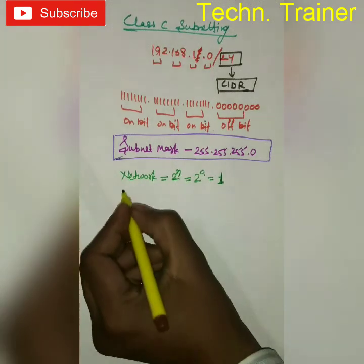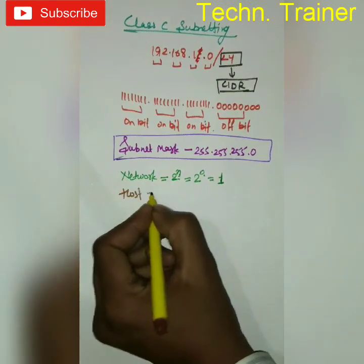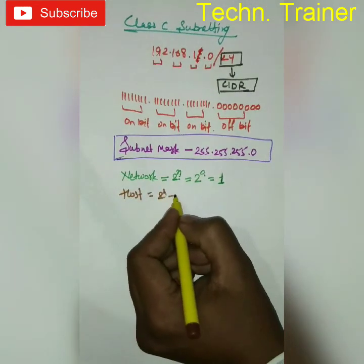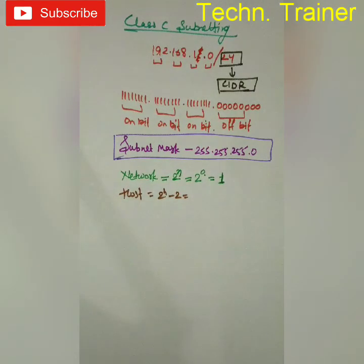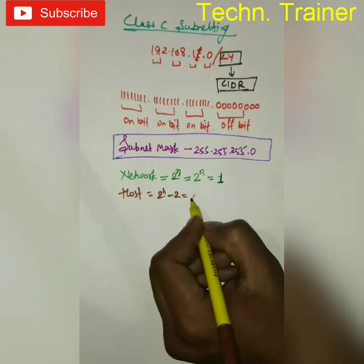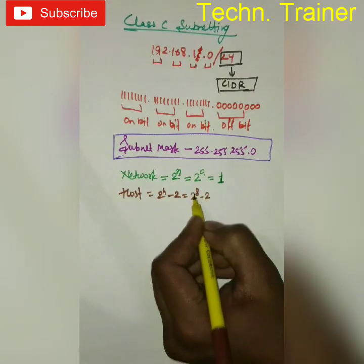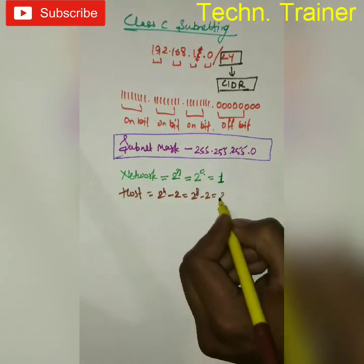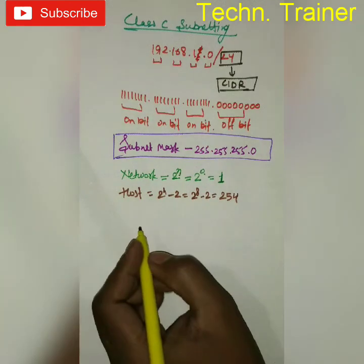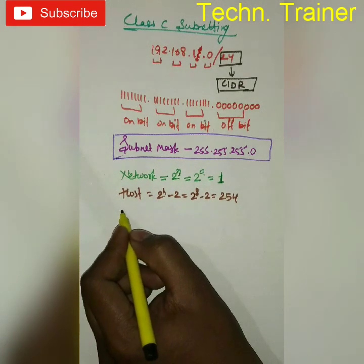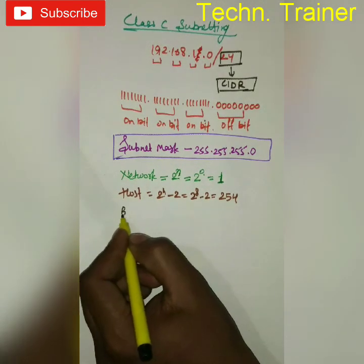Now we are finding the host count. Host is 2 to the power h minus 2, where h is how many bits are off, which is 8. So 2 to the power 8 minus 2 equals 254. So this network contains 254 hosts, meaning 254 systems are available in this network.